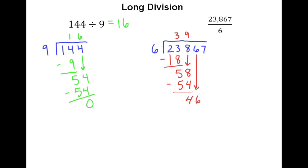Drop down the 6. 6 goes into 46. Well, 6 times 8 is 48. That's a little too large. So 6 times 7 is 42. Let me subtract and get a remainder of 4. Then I can drop my 7 down.